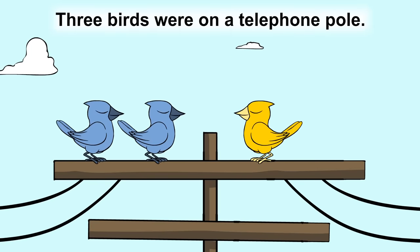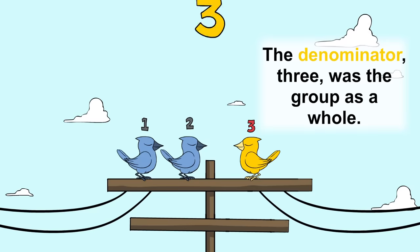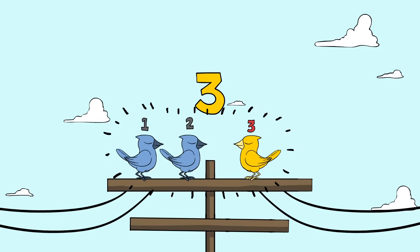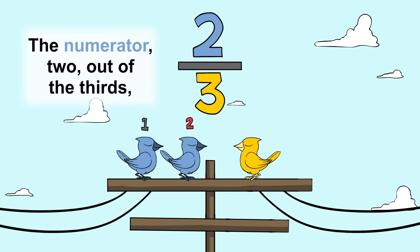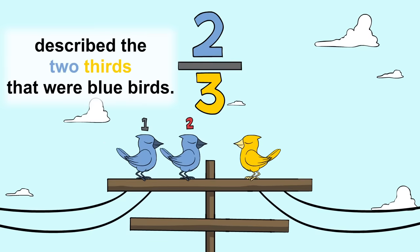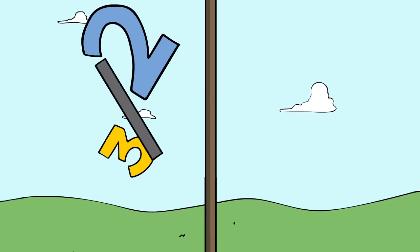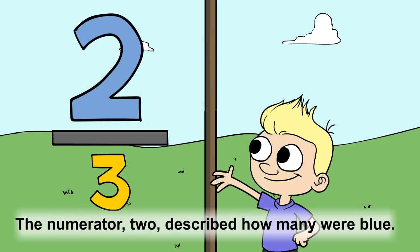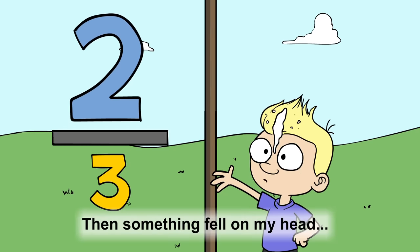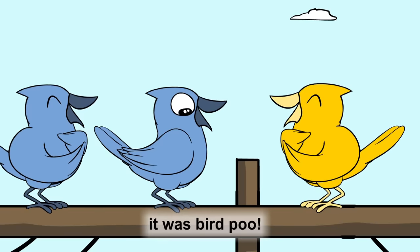Three birds were on a telephone pole. The denominator, three, was the group as a whole. The numerator two, out of the thirds, described the two-thirds that were bluebirds. The numerator two described how many were blue. Then something fell on my head. It was bird poo.